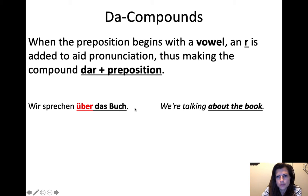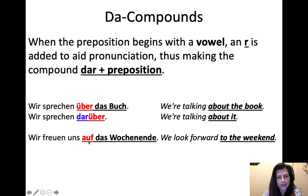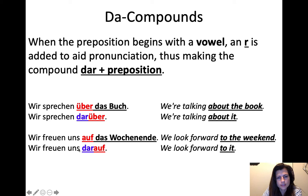'Wir sprechen über das Buch' — we're talking about the book. 'Über' means 'about' and it starts with a vowel, so we say 'wir sprechen darüber' — we're talking about it. Because if you didn't have the 'r,' it would be 'da-über,' and that's just too many vowels next to each other for German. You've got to put a consonant in there to separate them. Similarly, 'wir freuen uns auf das Wochenende' — we're looking forward to the weekend — becomes 'wir freuen uns darauf,' since 'auf' starts with a vowel.